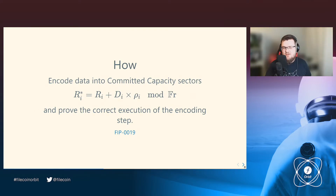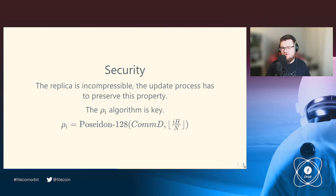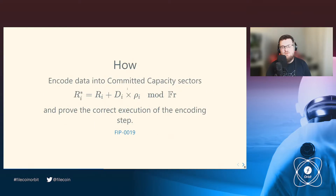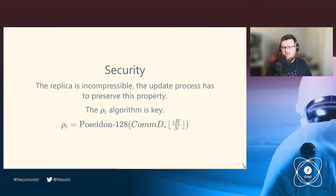You can read more about it in FIP-19. We performed the encoding process and then proved the correct execution of the encoding on-chain. The primary reason why the sealing process — porep — even exists is we want to create a replica that's incompressible. That's what brings Filecoin its security, and the update process has to preserve that property. The essential part is the rho-i algorithm. Rho-i is the randomness that mixes the data and doesn't allow it to reduce the randomness and incompressibility of the sealed sector. The ideal algorithm for rho-i would be pure randomness, but we cannot use it due to constraints around decoding the data later when the client wants to retrieve it. We settled on bucketed randomness.